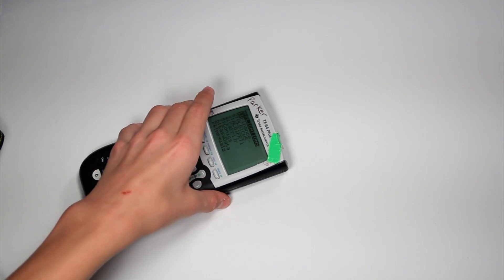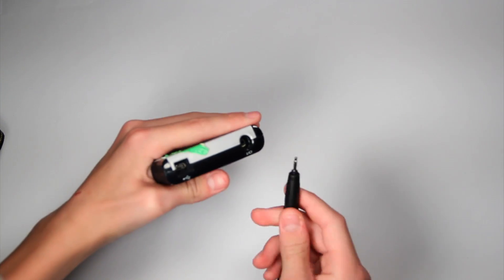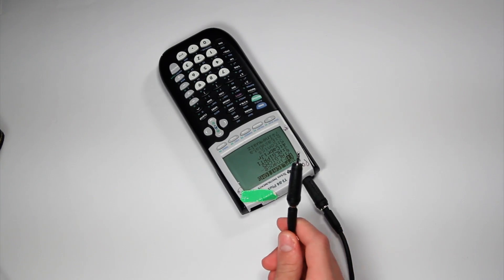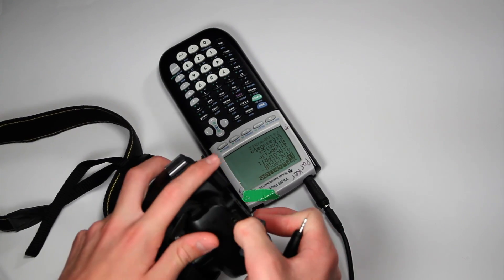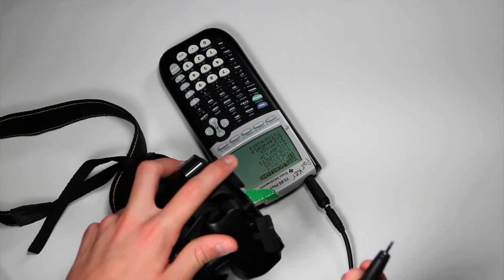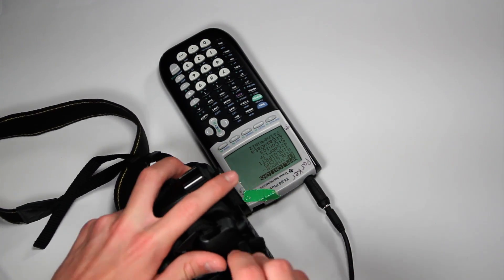So once you have the code written out, you're going to want to take your cable and plug it into the calculator where it says I-O. Just plug it right in there. And you're going to want to take the other end. And on your camera you're going to see a remote input which is 2.5mm on most cameras. You're going to want to plug it in there.